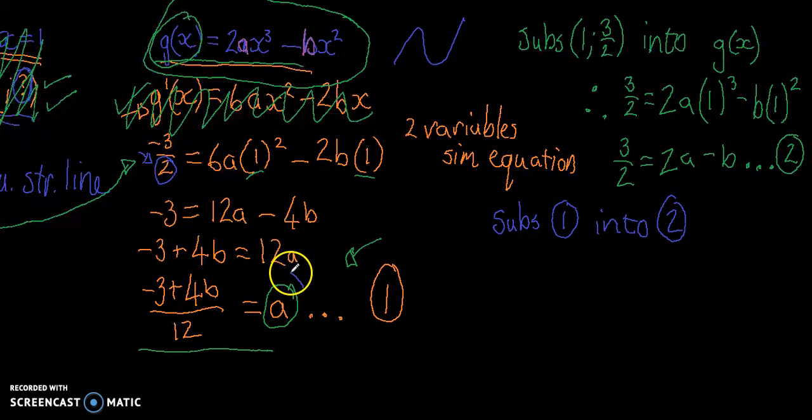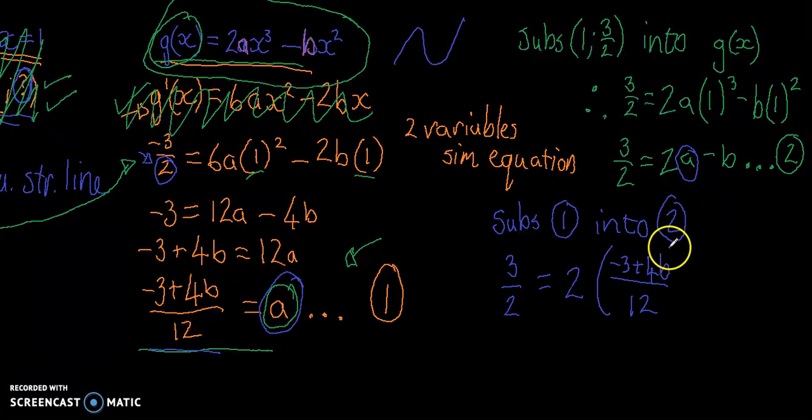I'm going to substitute 1 into 2. So that means everywhere I see an a in this equation, I'm going to replace it with minus 3 plus 4b over 12.